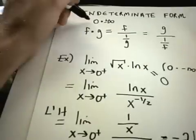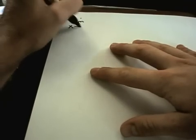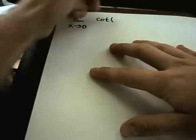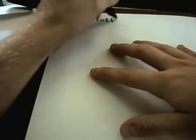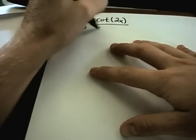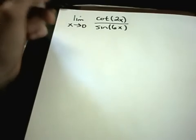Let's do one more of these indeterminate products is what they're known as. So let's look at the limit as x approaches 0 of cotangent of 2x divided by sine of 6x.